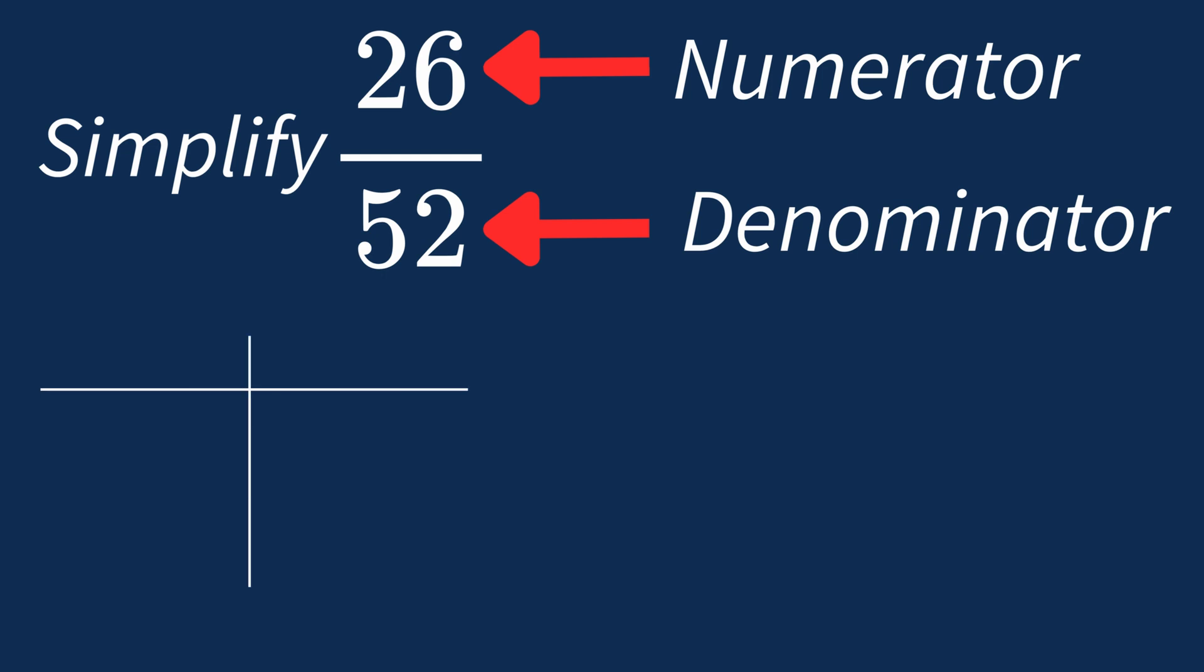First, let's list out the factors for each. For 26, the factors are 1, 2, 13, and 26.